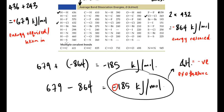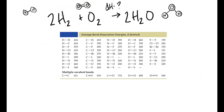Now I'm going to put up another example for you to try. This reaction shows the combustion of hydrogen in oxygen to produce water: two moles of hydrogen react with one mole of oxygen to produce two moles of water. I want you to calculate the enthalpy change for this reaction. To help, the molecules are shown: hydrogen has two H atoms joined by a single bond, oxygen has two O atoms joined by a double bond, and water has two O-H single bonds.